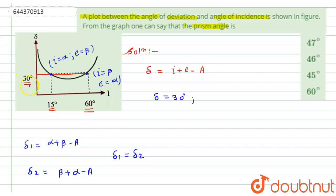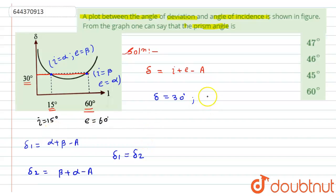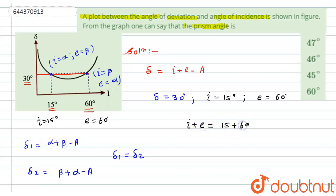From this calculation, if the angle of incidence is 15 degrees, the angle of emergence will be 60 degrees. So i plus e equals 15 plus 60, which equals 75 degrees.